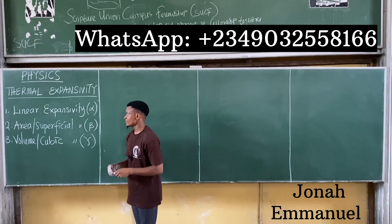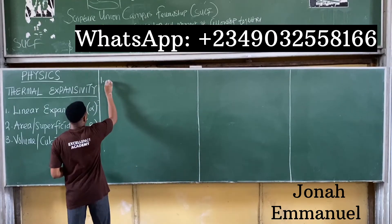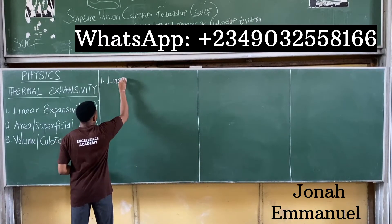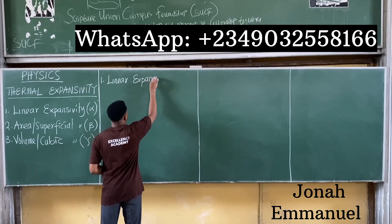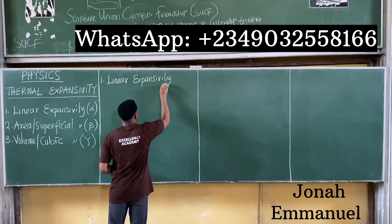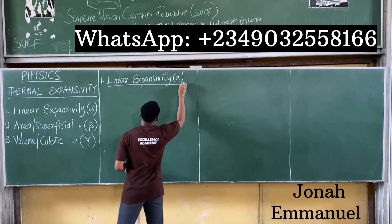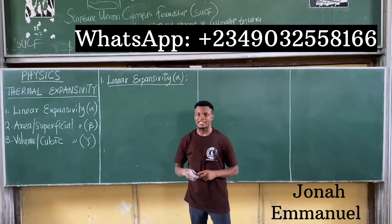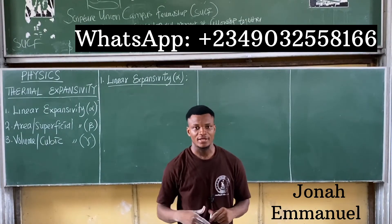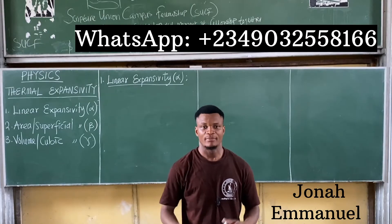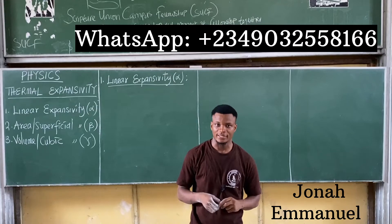Let's start with the first one: linear expansivity. By definition, linear expansivity is simply the increase in length, per unit length, per degree rise in temperature.